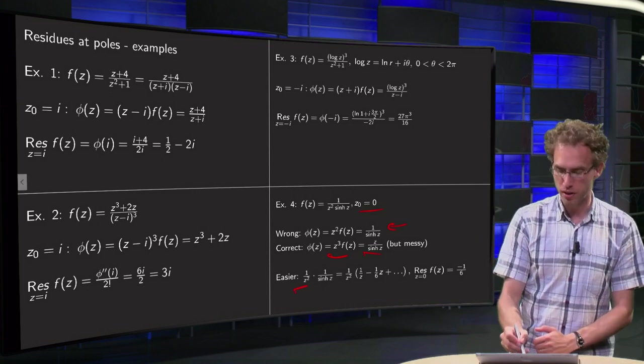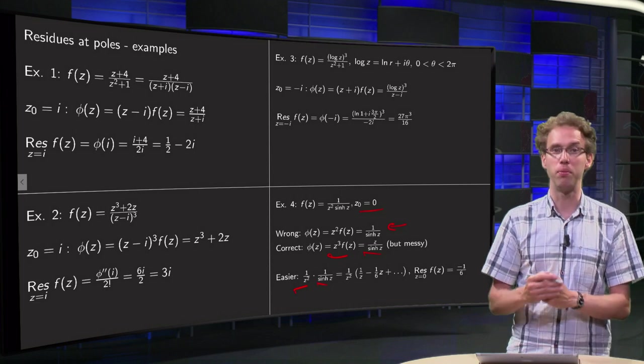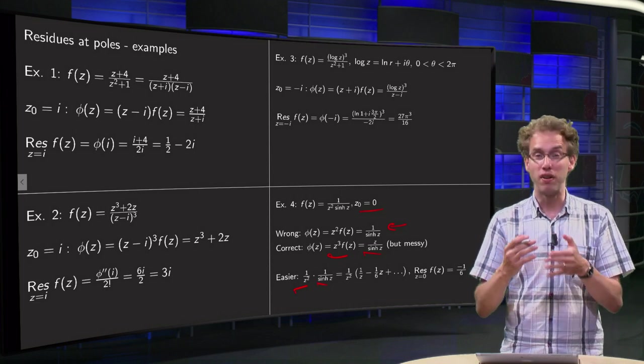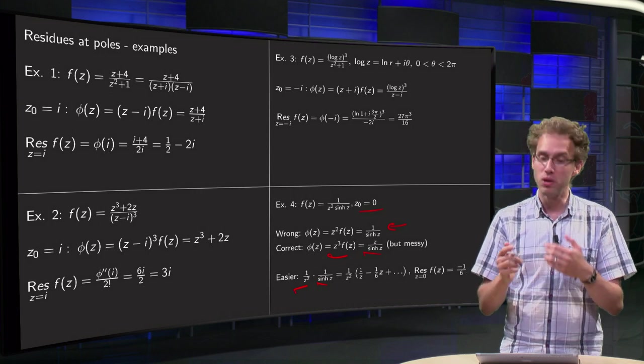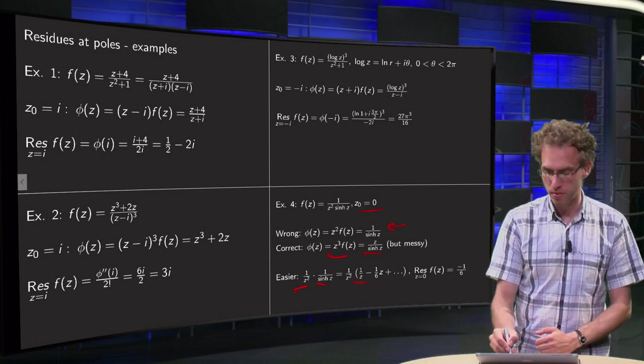Your function equals 1 over z squared times 1 over sine hyperbolic of z. You have to find the Laurent series of the 1 over sine hyperbolic of z, but only the first two terms, which are over here.